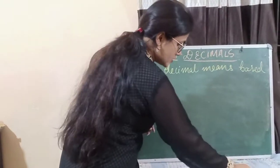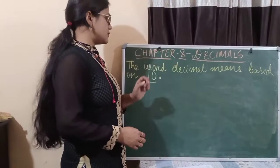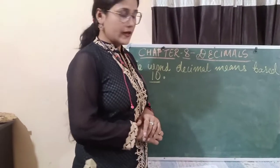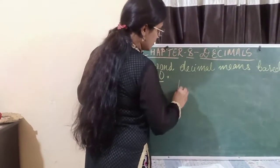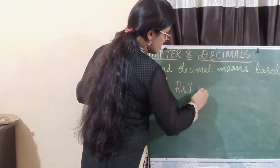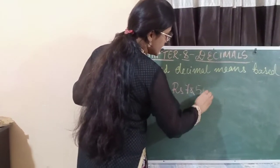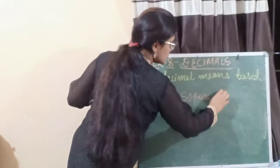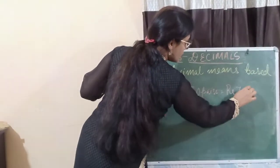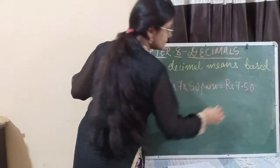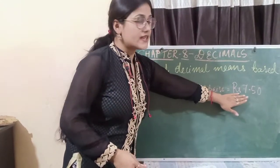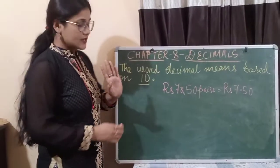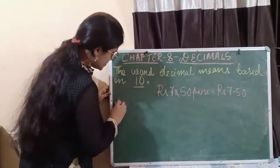So you have already learnt what are fractions. Now what is a decimal? The word decimal means based on 10. So if I tell you I have rupees 7 and 50 paise, I can write it as rupees 7.50. So this is the decimal representation of rupees 7 and 50 paise. Now let's see what is decimal notation.